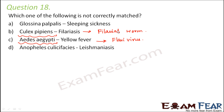Sleeping sickness is caused by the bite of the fly Glossina palpalis, also known as the tsetse fly. The disease gets communicated by the bite of this fly, and this fly species is native to Africa. So option A is also correctly matched.